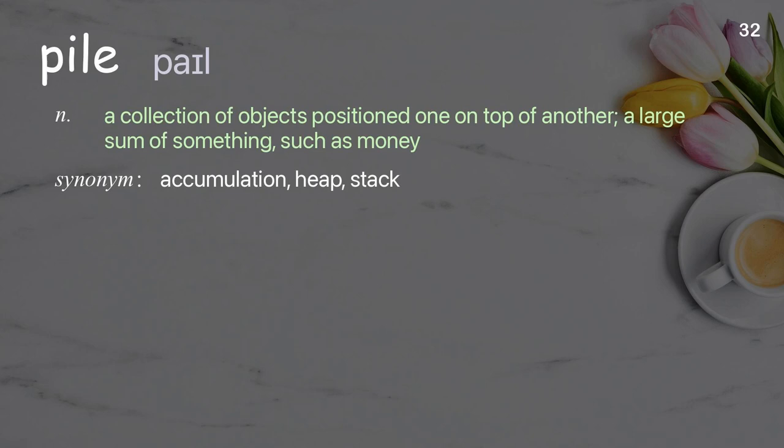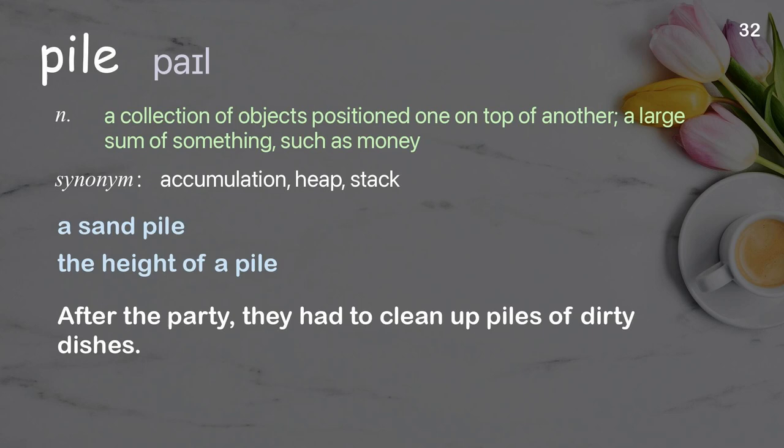Pile: a collection of objects positioned one on top of another; a large sum of something, such as money. Examples: a sand pile, the height of a pile. After the party, they had to clean up piles of dirty dishes.